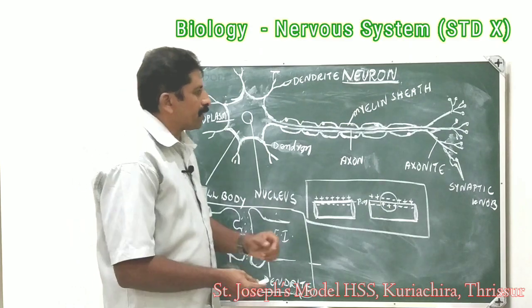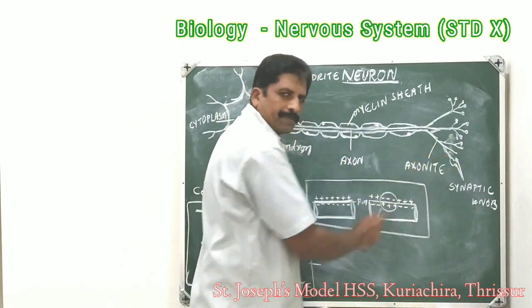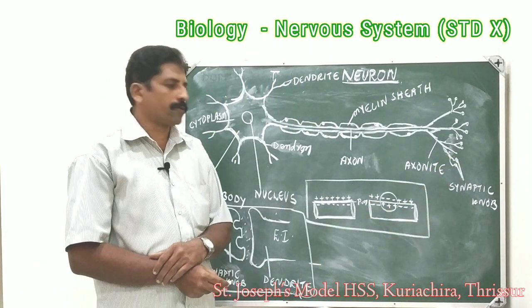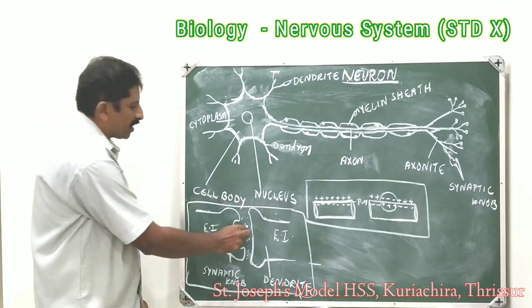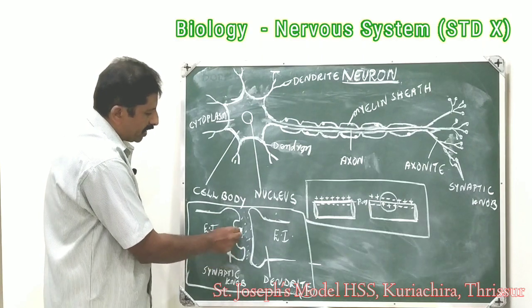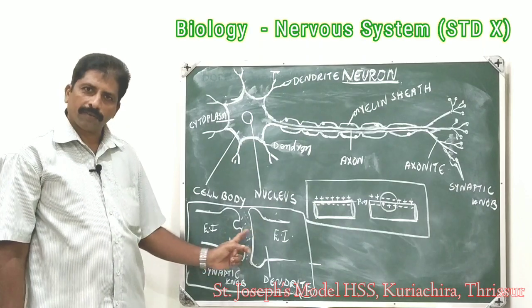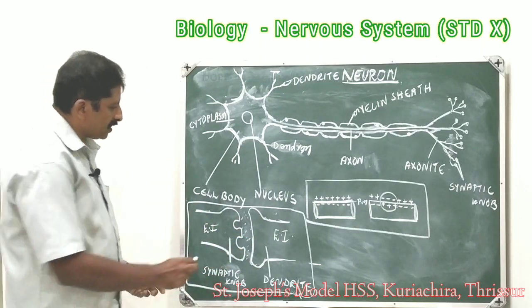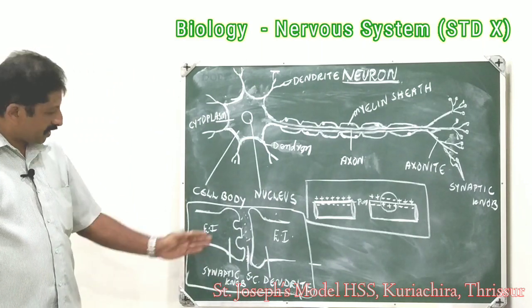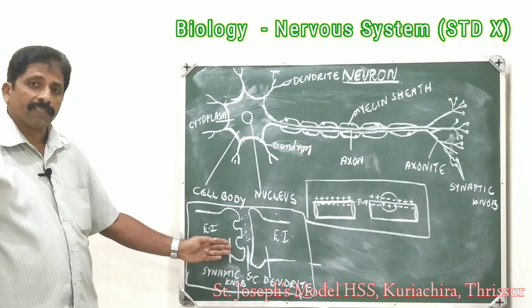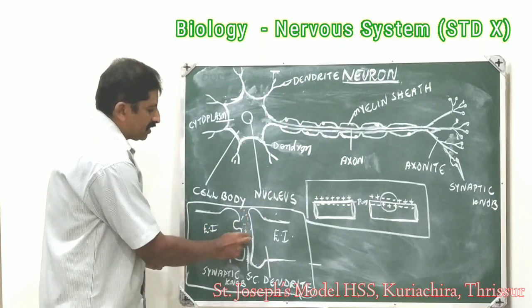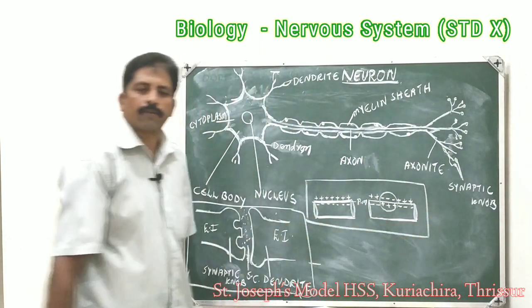As the electrical impulse reaches the synaptic knob, a chemical is secreted into the gap between adjacent neurons. This gap is called the synaptic cleft. The chemicals secreted from the synaptic knob into the synaptic cleft are called neurotransmitters — for example, acetylcholine.